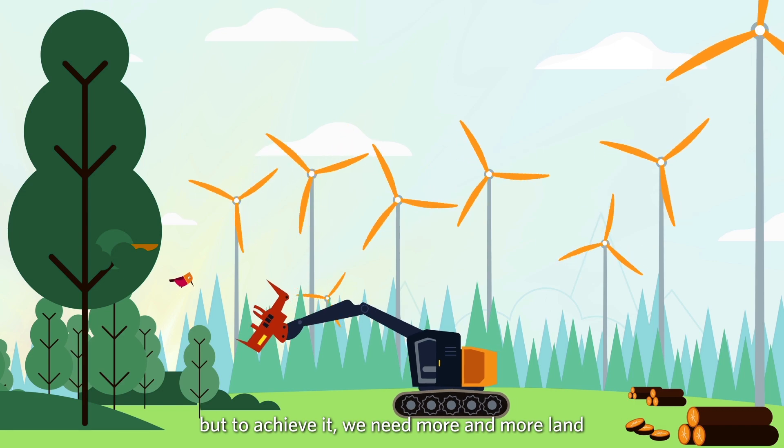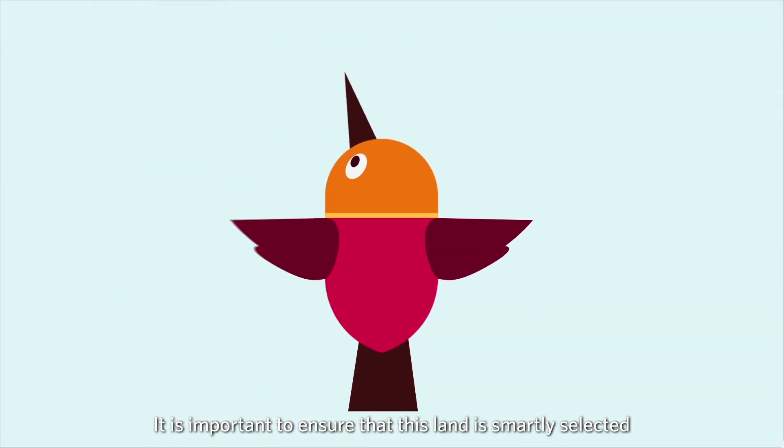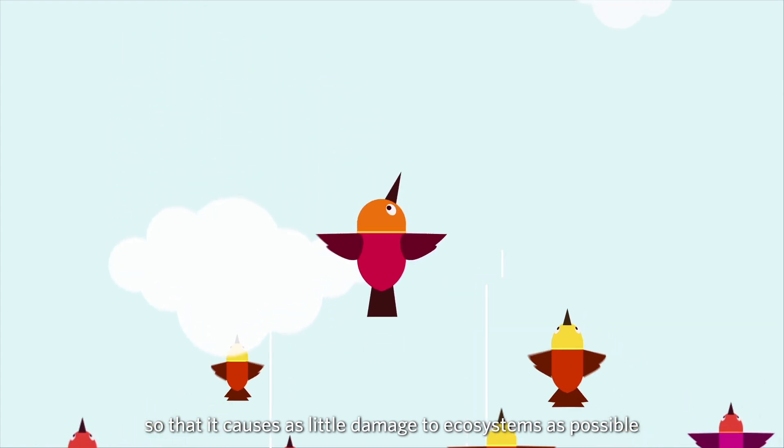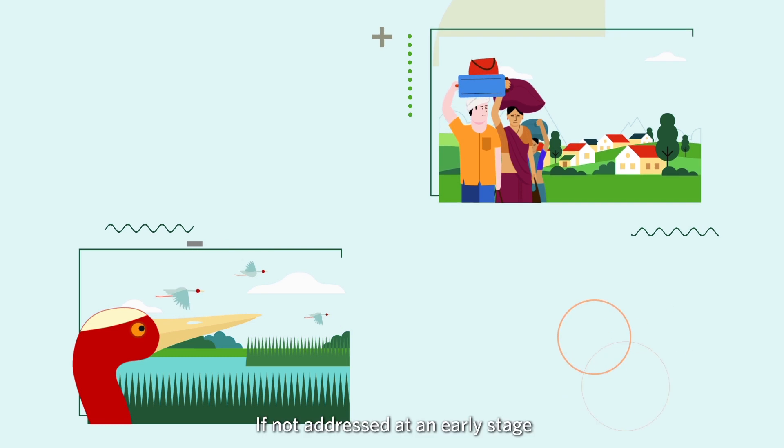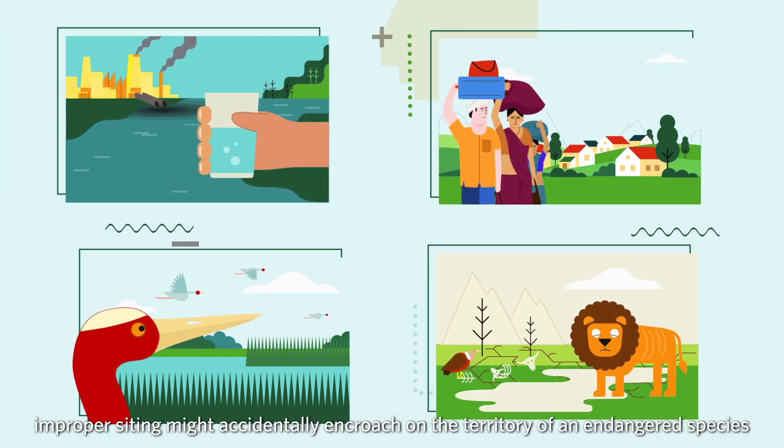But to achieve it, we need more and more land. It is important to ensure that this land is smartly selected so that it causes as little damage to ecosystems as possible. If not addressed at an early stage, improper